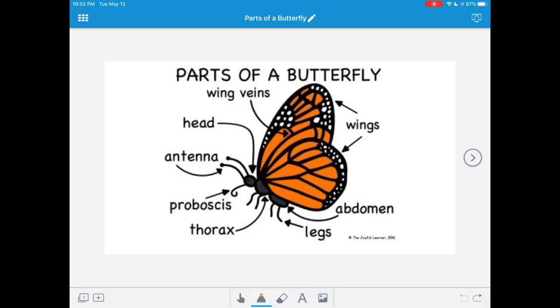The next part of the butterfly is its three body segments. Butterflies have three segments: the head, the thorax, and the abdomen. Let's talk about each one.